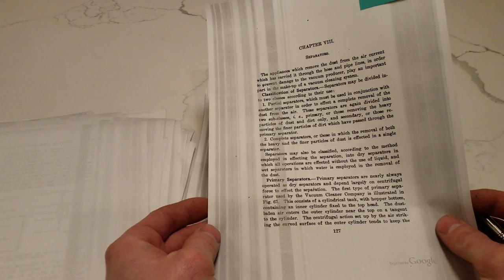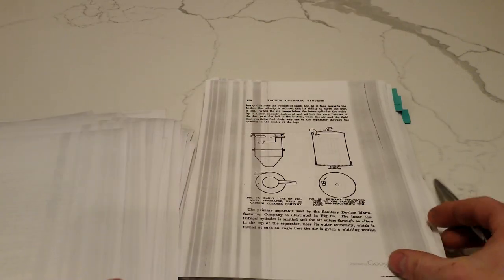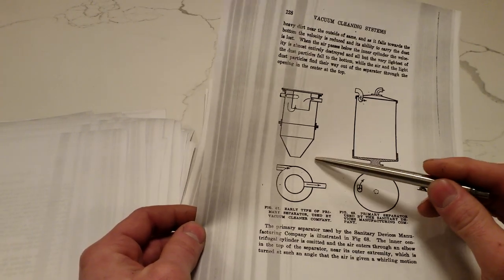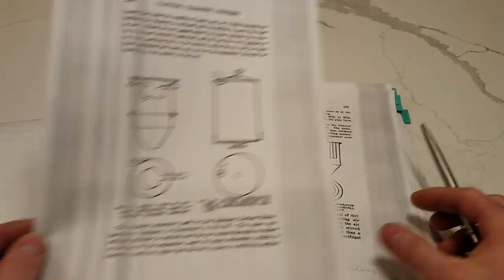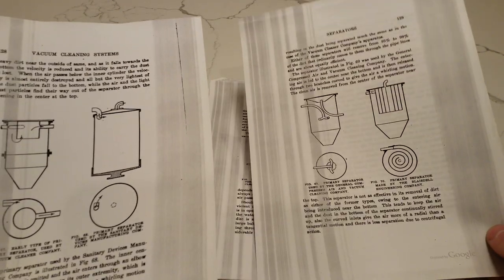This talks about the different types of separators. They classed them into primary and secondary. The primary separators were all just cyclonic. Here's the different takes that the different manufacturers had on cyclonic separators.